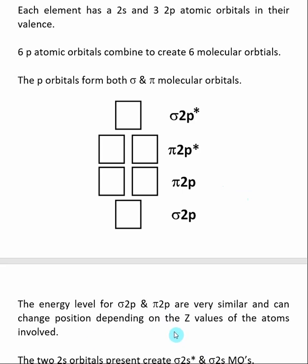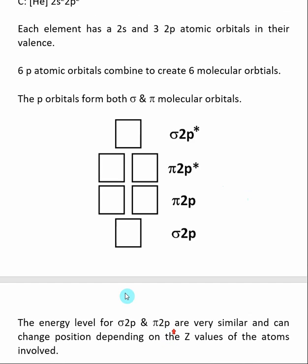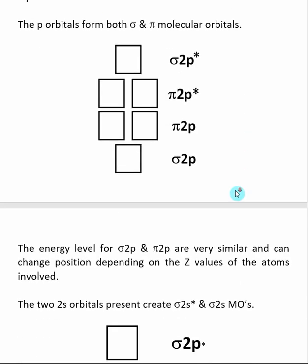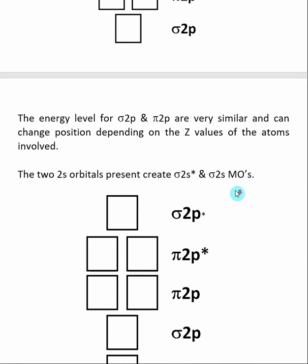The Z values are the number of protons inside of elements. Inside our electron configuration, in addition to the 2P subshell, we have a 2S subshell. Those two S orbitals combine to create a sigma 2S bonding molecular orbital and a sigma 2S star antibonding molecular orbital.